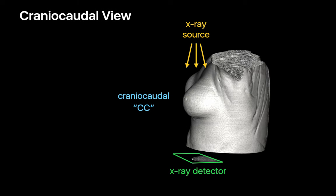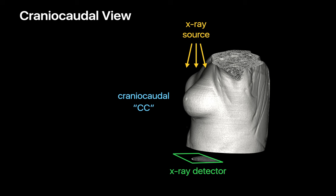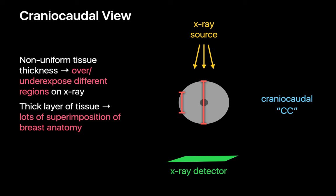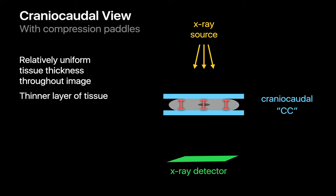For now, let's go back to that cranial caudal, or CC, view of the breast. If we were to image the breast exactly like this, we'd encounter a problem with our image. The amount of breast tissue x-ray photons pass through would be different in the center of the breast compared to the edge of the breast, which means that different parts of the breast would be either relatively under or overexposed. In addition, there'd be a lot more superimposed breast tissue in the center of the breast, which could make interpreting anatomy and other findings tougher than near the edge of the breast. That's why we use paddles to compress the breast into a slab so that it's thinner and also of relatively uniform thickness when we image it.